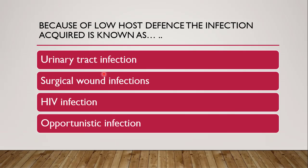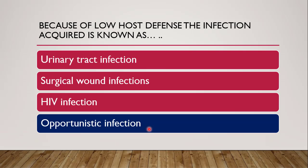Next question: because of the low host defense, the infection acquired is known as what? Options are urinary tract infection, surgical wound infection, HIV infection, or opportunistic infection. The correct answer is opportunistic infection. Opportunistic infections can be acquired easily because of the low immunity of the patient.